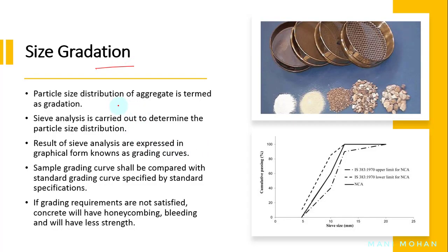Size gradation: particle size distribution of aggregate is termed as gradation. To determine the particle size distribution, sieve analysis is carried out. Results of sieve analysis are expressed in graphical form known as a grading curve. The sample grading curve shall be compared with the standard grading curve specified by standard specifications. Here the grading curve has been prescribed for a 20 mm size aggregate as per IS-383-1970, with an upper limit and a lower limit for the 20 mm grading.